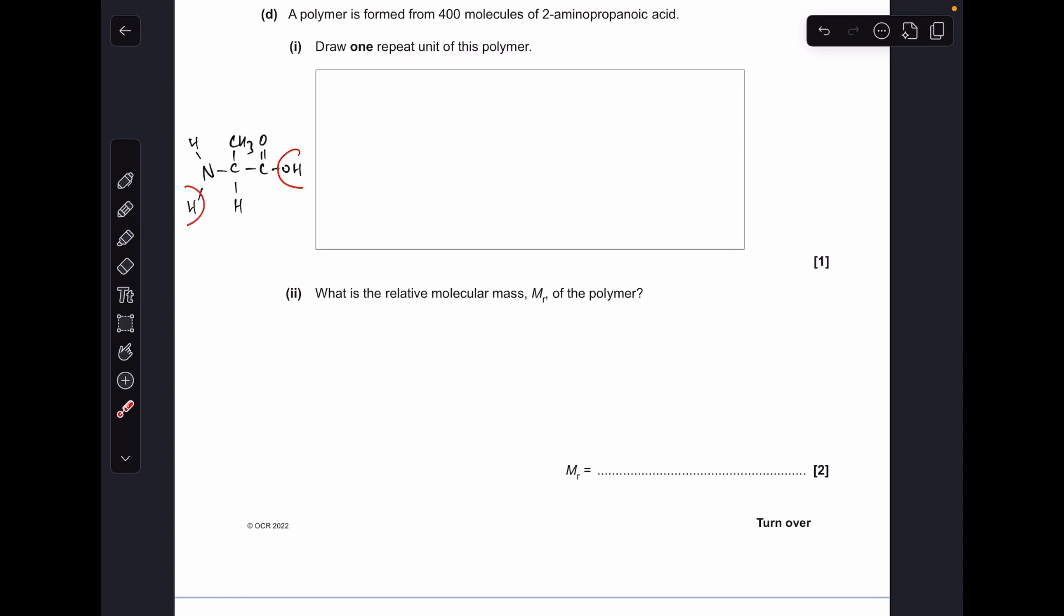Moving on to part D. You can see I've drawn up here the monomer, the 2-aminopropanoic acid, and I've lassoed out the H and the OH, which obviously they need to come off so we can join the monomers together to make the polymer. So that means the repeat unit of this polymer is going to look like that.